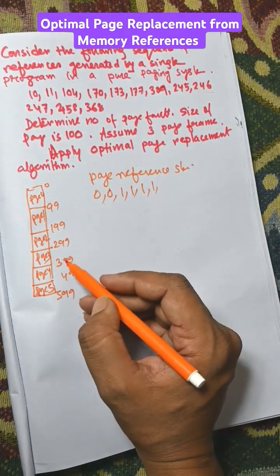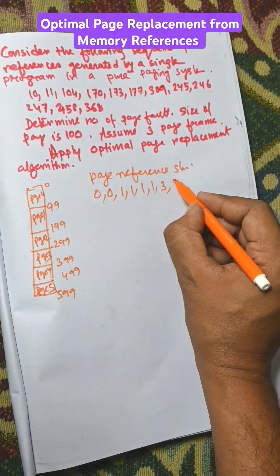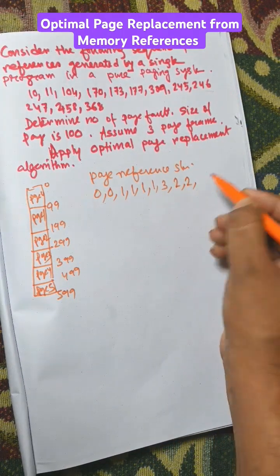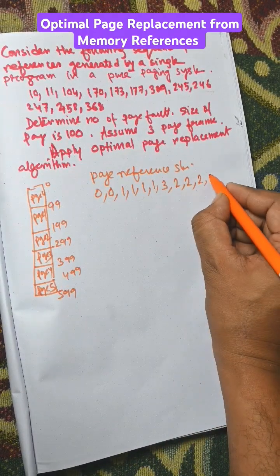309 available in page 3, 245 in page 2, 246 in page 2, 247 in page 2, 458 in page 4.